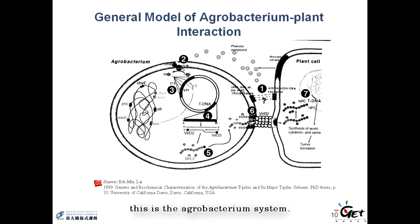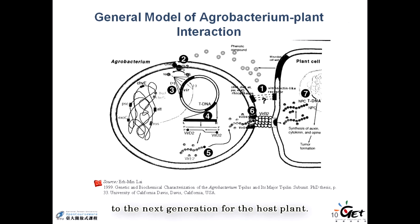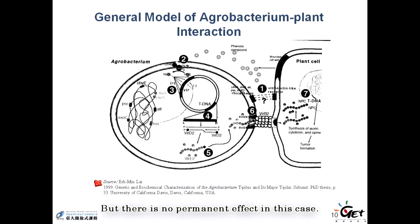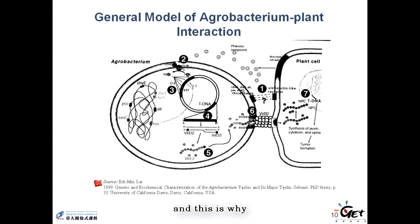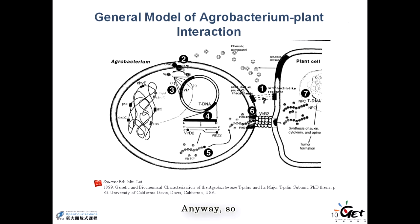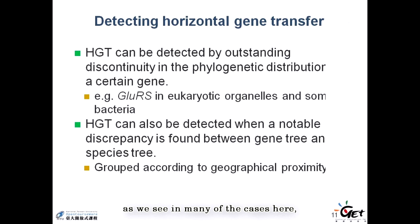This is the Agrobacterium system, but it does not transmit the DNA to the next generation of the host plant — the host plant will not carry the DNA permanently. Only the area near the root or stem will have this proliferation, so it is kind of a disease to the plant with no permanent heritable effect. However, because it has a very special and well-studied mechanism to transfer DNA, in biotechnology we now use Agrobacterium to transfer DNA into host cells.